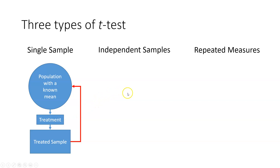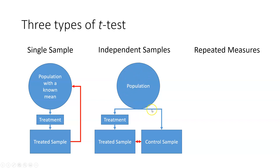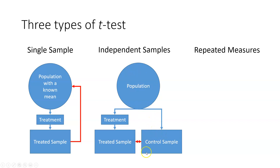An independent sample scenario looks something like this: you have a population — we usually don't know the mean — and we draw two samples from it. One is the control sample that doesn't receive a treatment, and the other receives a treatment. We compare the treated sample versus the control sample to see if they have the same mean. If they don't, the control sample represents the population, and if the treated sample is higher or lower, that means the treatment made the scores better or worse.